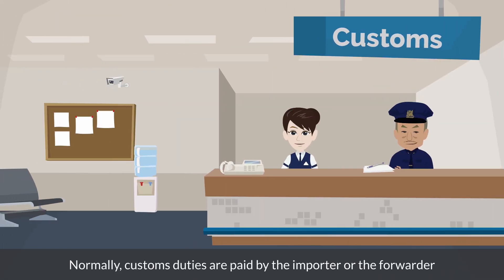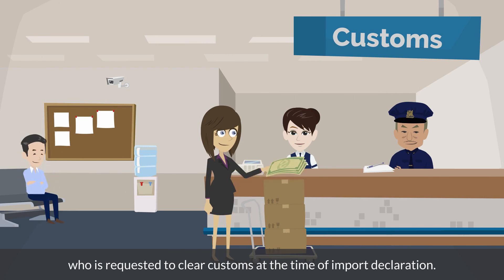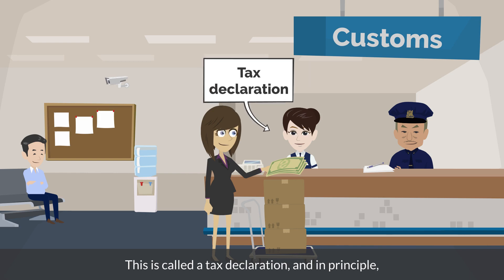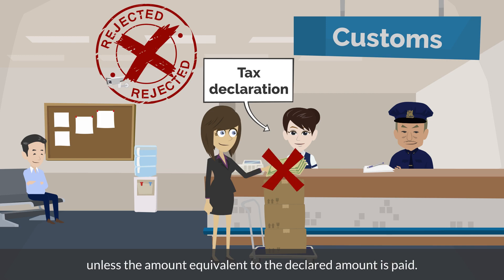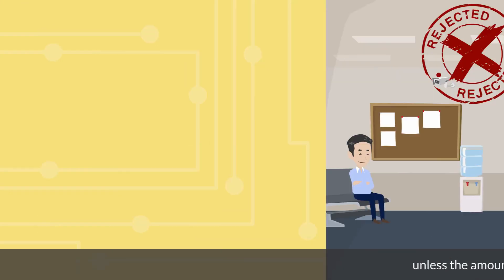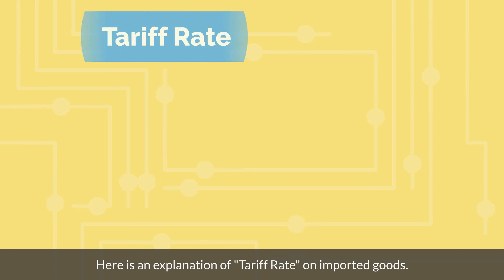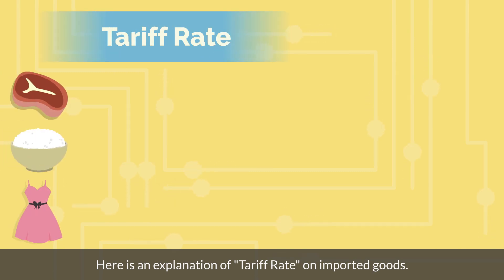Normally, customs duties are paid by the importer or the forwarder, who is requested to clear customs at the time of import declaration. This is called a tax declaration, and in principle, an import permit will not be granted unless the amount equivalent to the declared amount is paid.